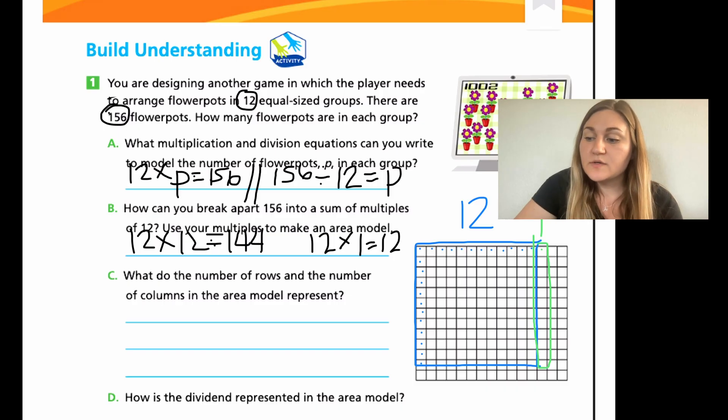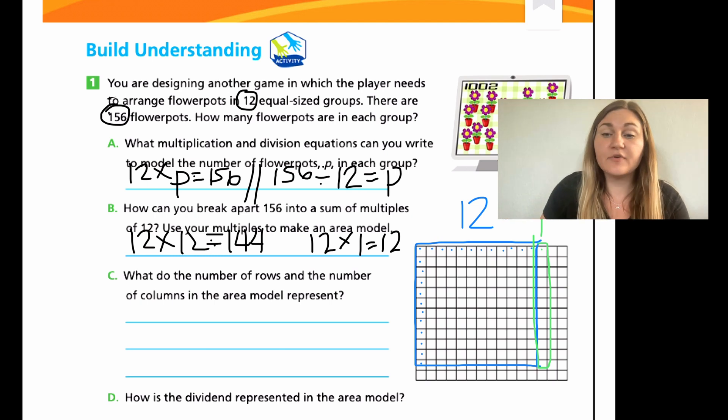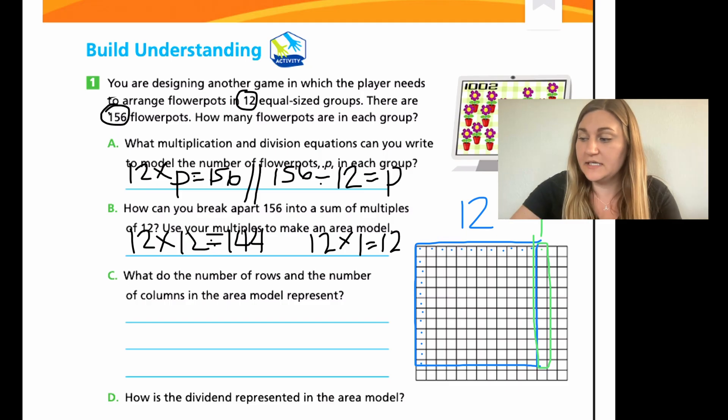All right. So, this is 1 and then this is 12. All right. So, then it says, what do the number of rows and the number of columns in the area model represent? This can be tricky. So, the rows go this way. So, I have 12 rows. That's the number of groups that it gave us in the problem. So, 12 equal sized groups. That's why we did 12 rows. Now, the columns are going up and down and you see I have 12 and then I have one more. So, I have 13 columns. That's the number of pots in each group. That's your 13 pots in each group. That would be your P that we did from letter A. Okay. So, go ahead and write that in your own wording.